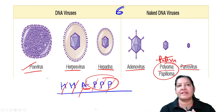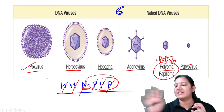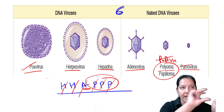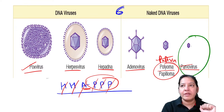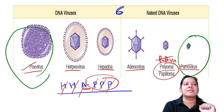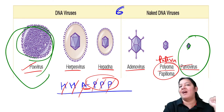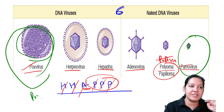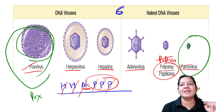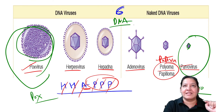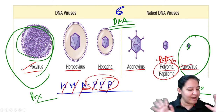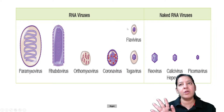Among the DNA viruses arranged by size in decreasing order, the smallest is Parvo and the largest is Pox. So among the six DNA viruses: Pox is the largest and Parvo is the smallest.